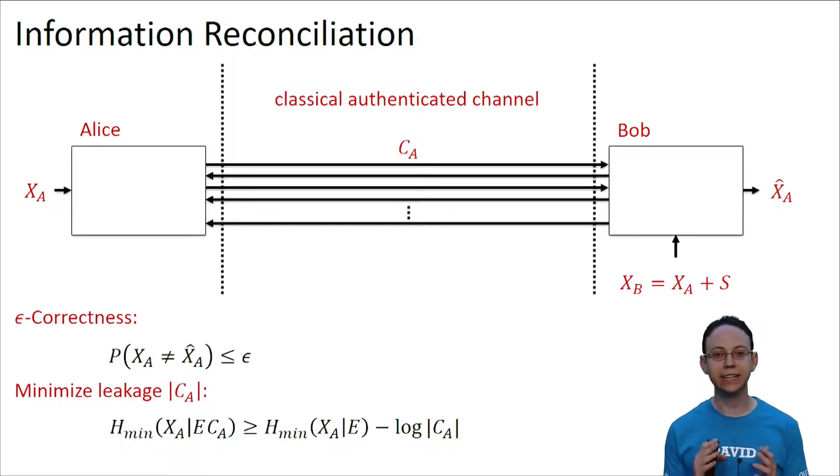Again, it is very easy to achieve any of both goals independently. Why is this? Imagine that a reconciliation protocol consists of Alice sending her whole string to Bob over the classical channel. This is a great protocol if we only care about correctness. The strings will definitely be correct, but the leakage is maximal.